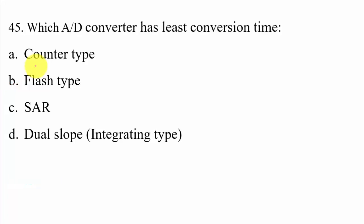45th question: which A-to-D converter has the least conversion time? Flash type requires the least conversion time, in the order of a few nanoseconds. Counter type requires 2ⁿ clock pulses, SAR requires n clock pulses, and dual slope requires (2^(n+1) − 1) × T_clock pulses. Flash type needs only a few nanoseconds. Hence option B is correct.